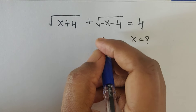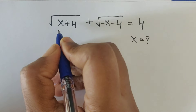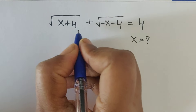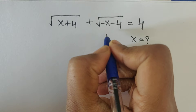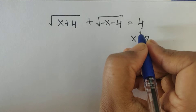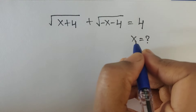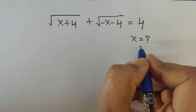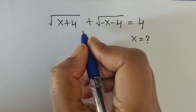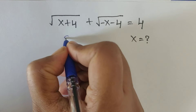Hello everyone, welcome back to our channel. Here we have one problem: square root of (x plus 4) plus square root of (minus x minus 4) equal to 4. In this problem we have to find the value of x. So how do we solve this problem? Let's see.